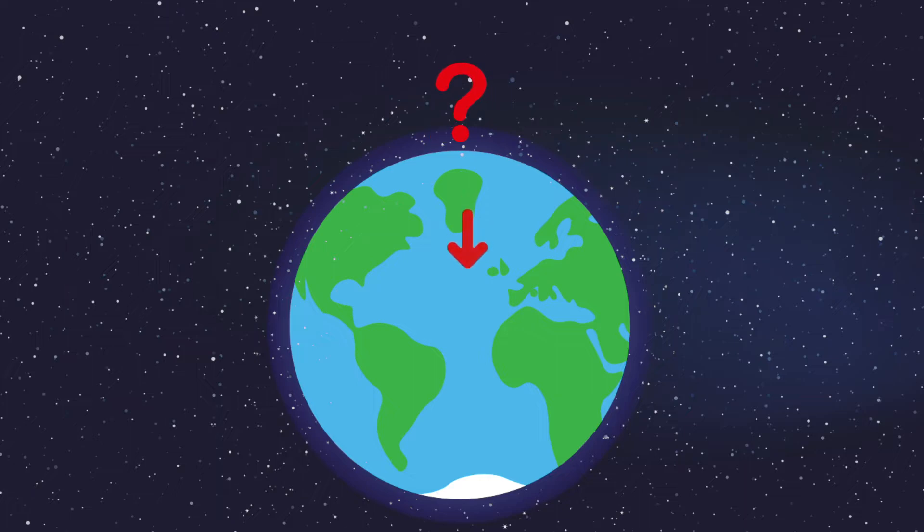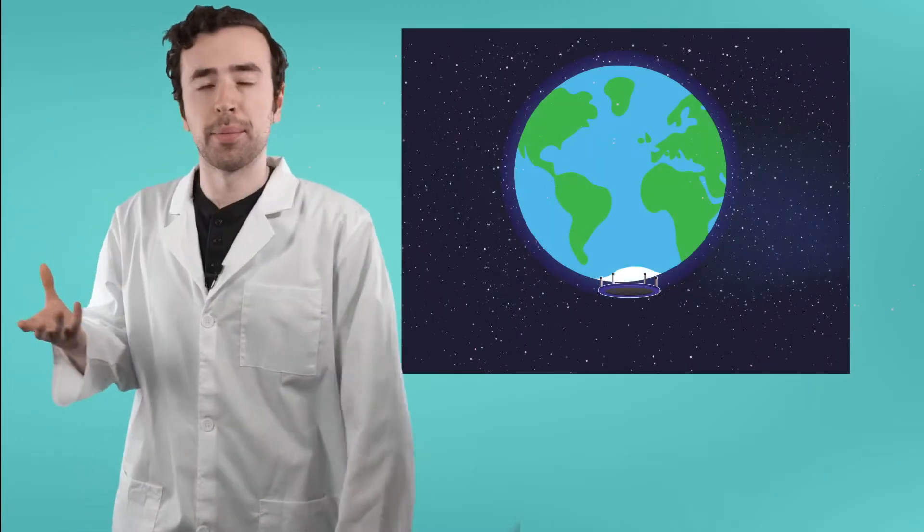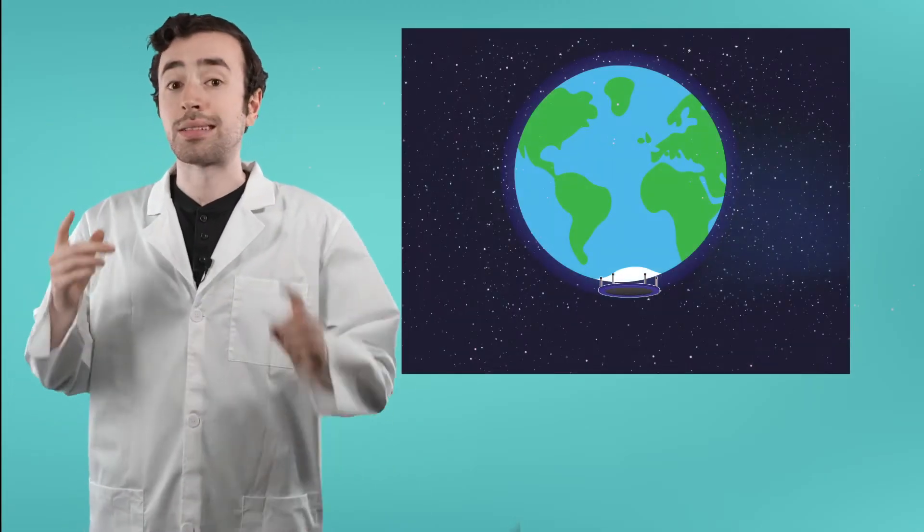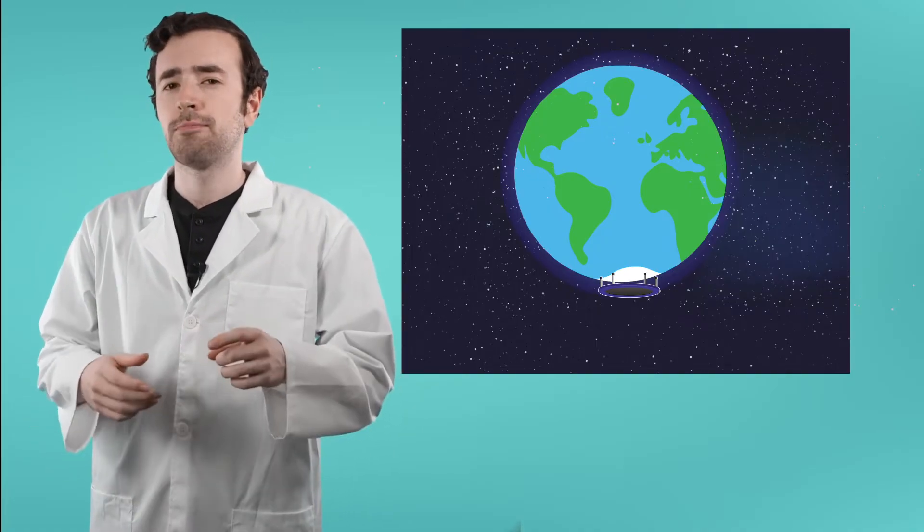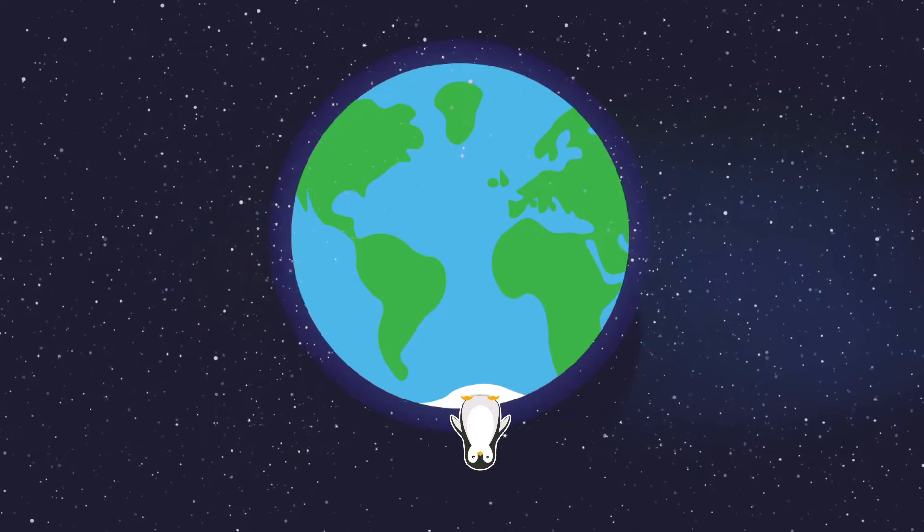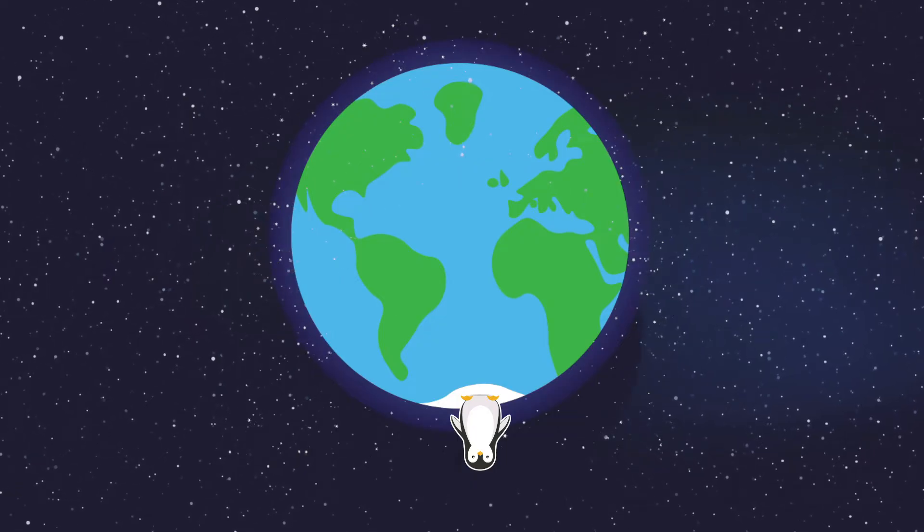But, does gravity really pull things down? Let's go back to that jumping off the bottom of the globe question. Instead of paying all those exorbitant shipping fees that I would need to mail my trampoline to Antarctica, why don't we just look at something that's already there? Penguins. Penguins can be found in Antarctica, on the bottom of the globe. So, if gravity pulls down, why don't they go flying off into outer space?